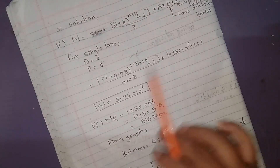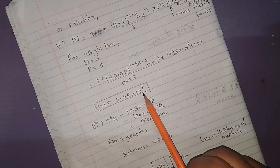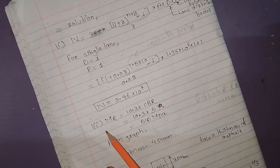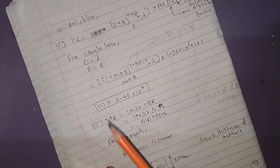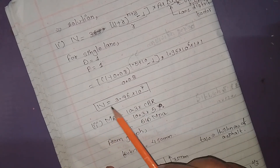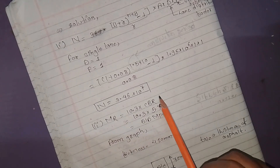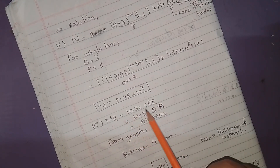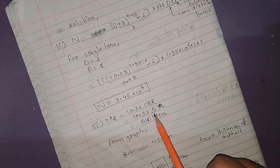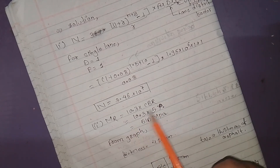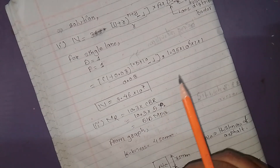The calculated value is 3.46 × 10^7 ESAL. The subgrade resilient modulus uses the formula: MR = 10.3 × CBR. With CBR = 5, this gives MR = 51.5 MPa.